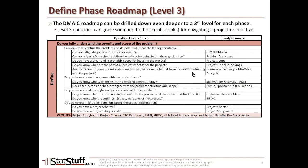Then ask yourself: Are the minimum — that is, the worst case — or the maximum — that is, the best case — potential benefits worth continuing with the project? If you're not sure or don't know how to do that, refer to the project pre-assessment or a min-max analysis to help you. The idea here is that once you can answer all these questions at this third, deepest level, that should help you in answering the question above it: Can you clearly define the problem and its potential impact to the organization?